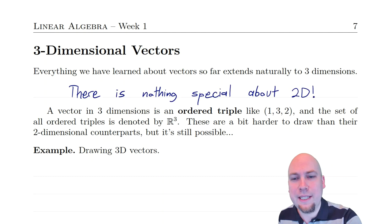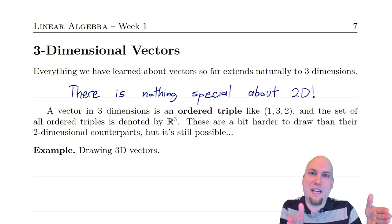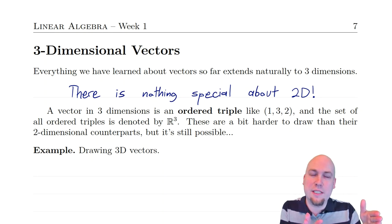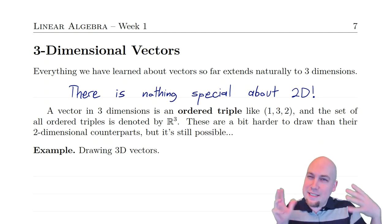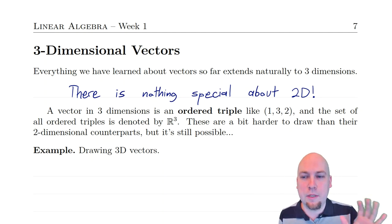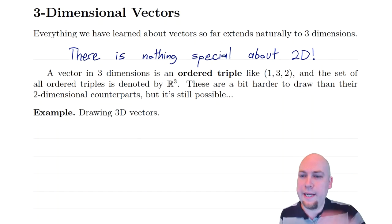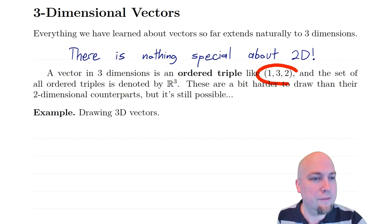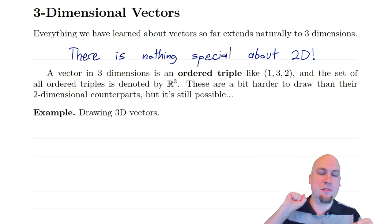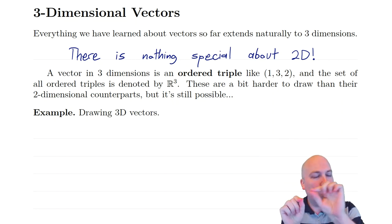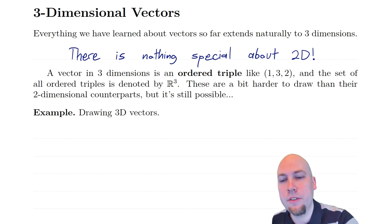There's really nothing special about 2D. There's no reason that when we list out entries of vectors we have to stop after two entries, and no reason we only have to work with arrows in two-dimensional space. These higher dimensions exist even if they're harder to visualize. When we're talking about 3D vectors, what we mean is an ordered triple of numbers — something like 1, 3, 2. The first entry is 1, the second is 3, and the third is 2. Order matters in vectors no matter how many dimensions they have.